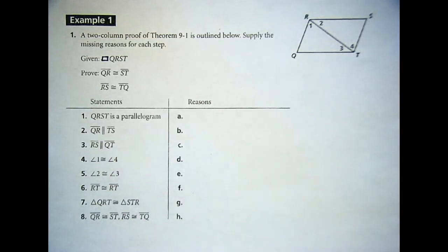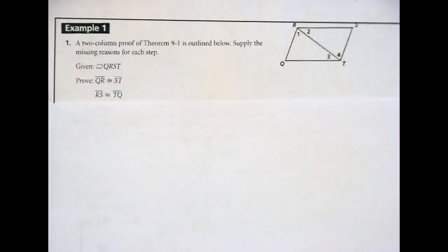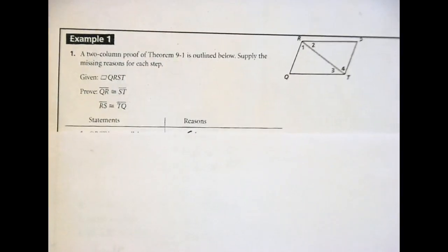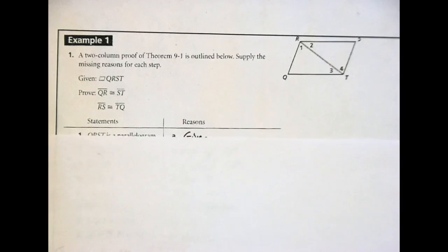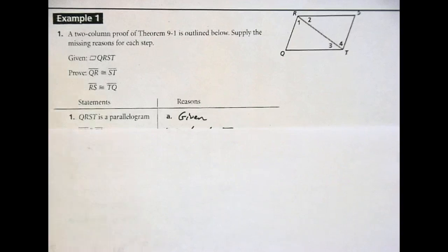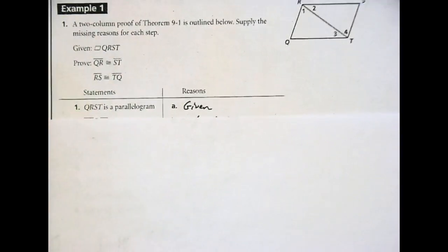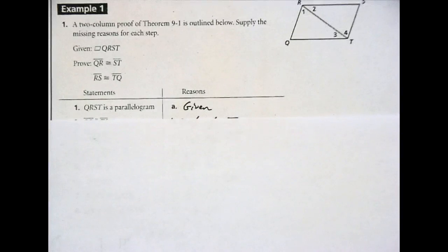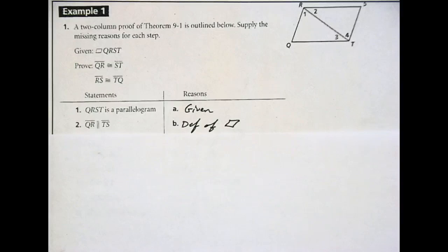Work with your group. Try to fill out as many of the reasons that you can. Here we go, number one. How many got given? Number two, definition of parallelogram. This one? Parallel lines by definition. Number three, parallel lines by definition. Number four, alternate interior angles.